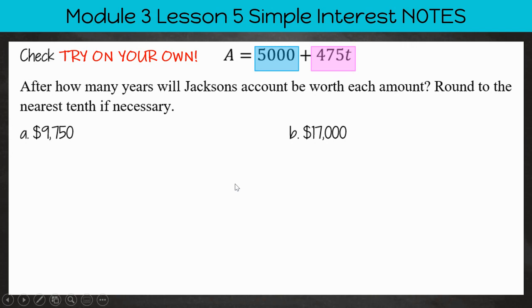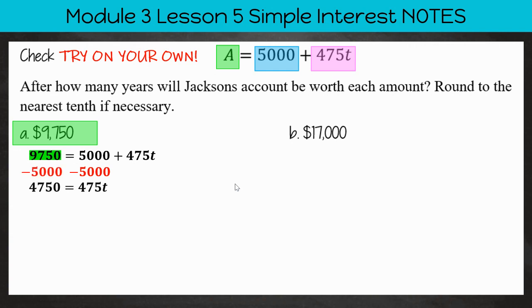Now that you're ready to check your work, let's review. We're plugging in the $9,750 for A, and that's going to equal $5,000 plus $475 T. So we're going to subtract $5,000 from both sides. Then we're going to divide by $475. And we find that T is equal to $10, or after 10 years, he'll have $9,750.